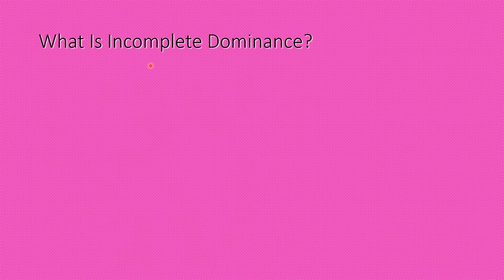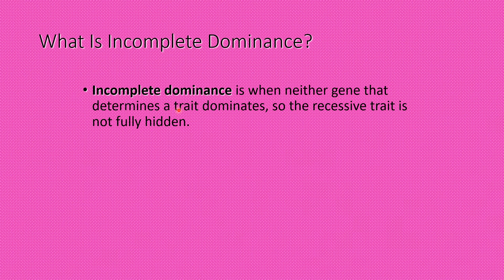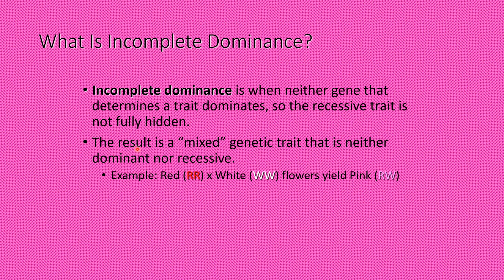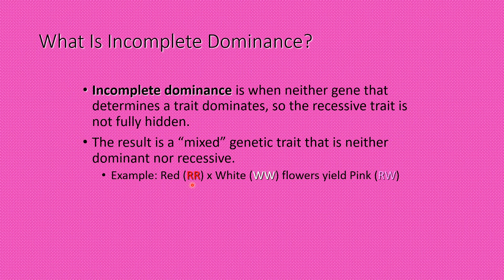What is incomplete dominance? Incomplete dominance is when neither gene that determines the trait dominates, so the recessive trait is not fully hidden. The result is a mixed genetic trait that is neither dominant nor recessive. Example: white (WW) and red (RR) result in pink, which is the mixture of red and white.